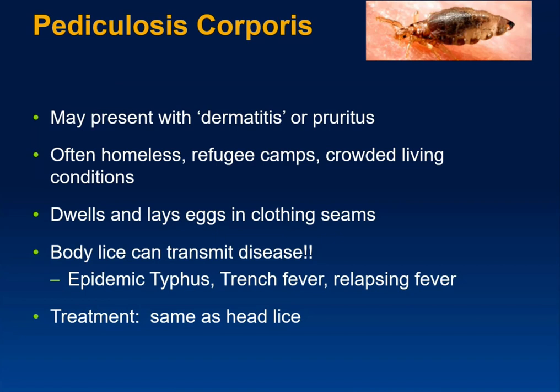Body lice can present with dermatitis or pruritus, and are associated with crowding — homeless areas, refugee camps, places with poor hygiene. They live in clothing — on blankets and in the seams where they hide. They can transmit disease, including endemic trench fever and relapsing fever. Treatment is the same as for head lice.